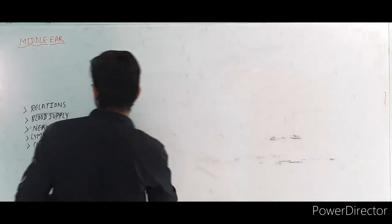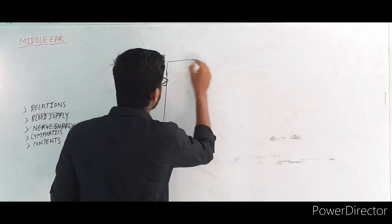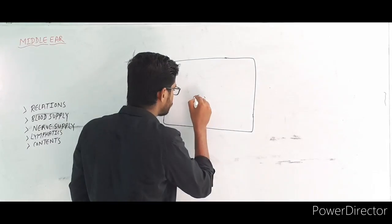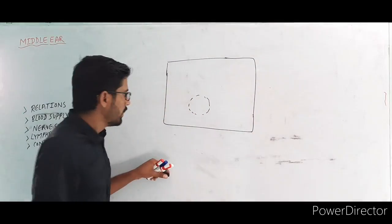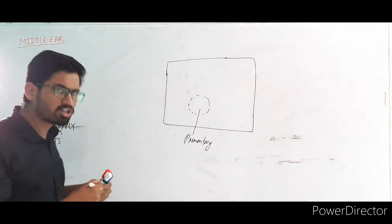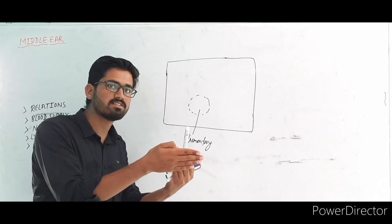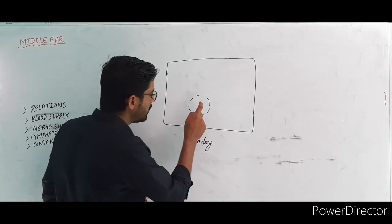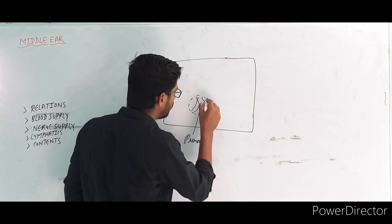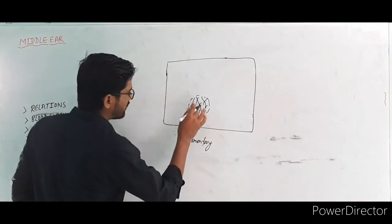Now concentrate on the medial wall of the middle ear. There is a rounded elevation called the promontory. The promontory is formed by the basal turn of the cochlea — from the medial wall side, the basal turn of the cochlea creates this elevation. On the promontory is the tympanic plexus. The promontory is the first important feature of the medial wall.